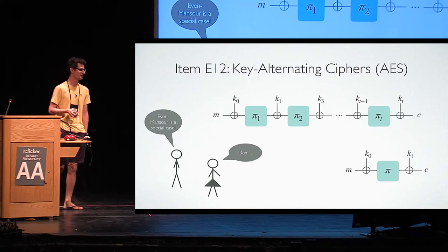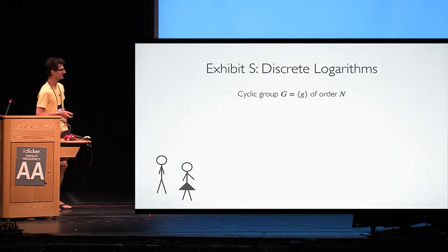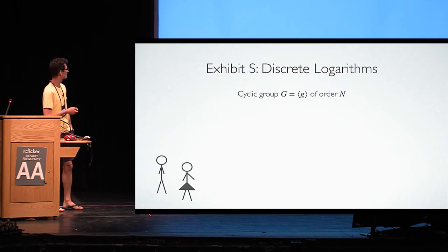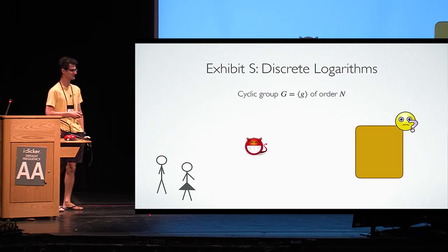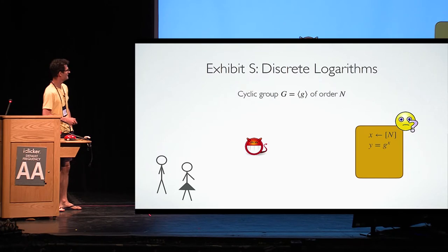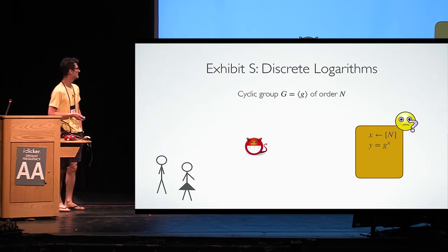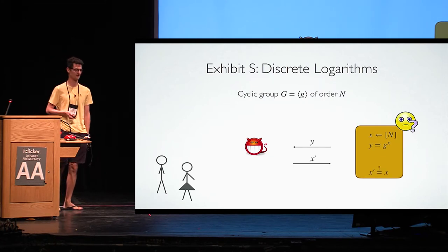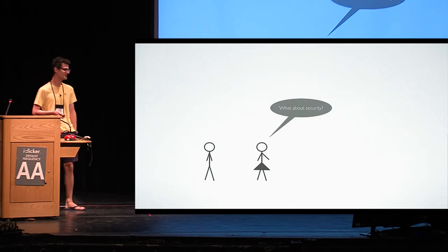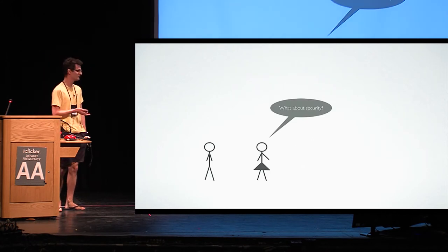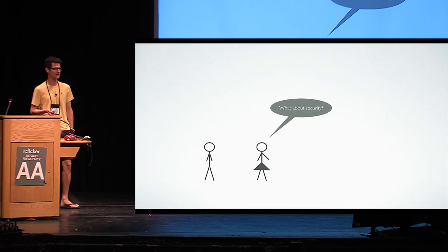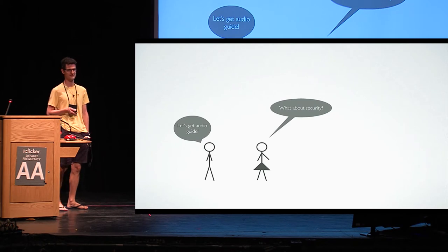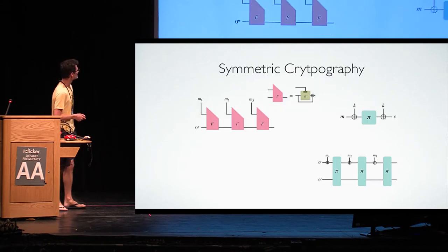They look at it and go on to the public key crypto section, where they see the discrete logarithm problem: a challenger chooses a random exponent, computes G to the X, sends that to the attacker, and the attacker tries to find the discrete log. Alice asks how you assess security of these things. Bob has no idea, but they get an audio guide. The audio guide says that in symmetric cryptography, what often happens when you try to derive security bounds is that you replace your basic primitive by something ideal.